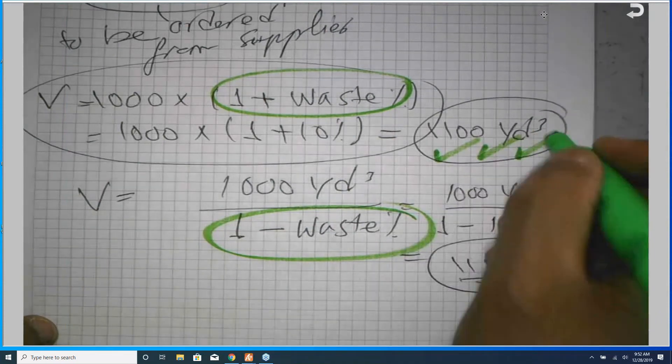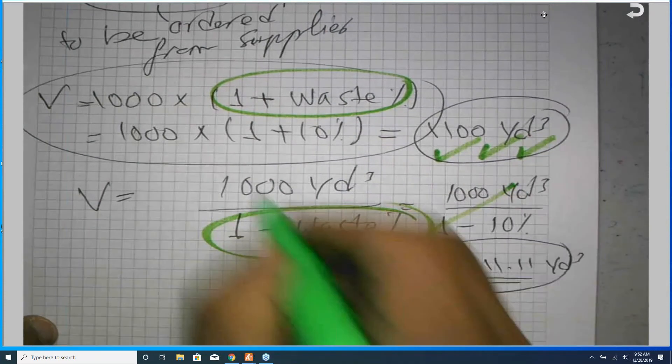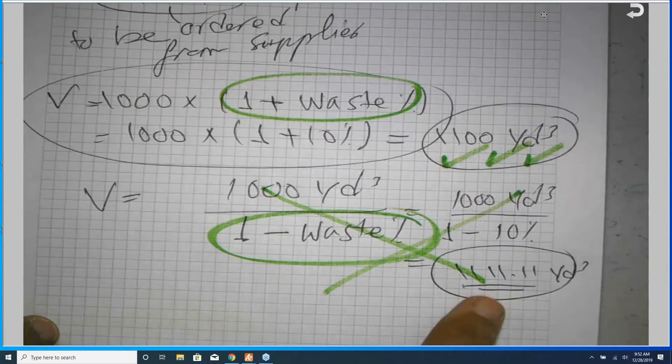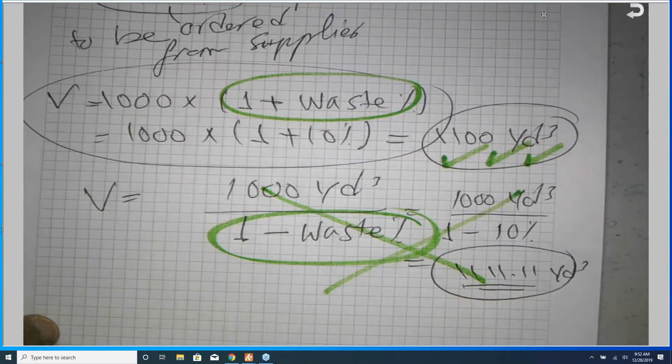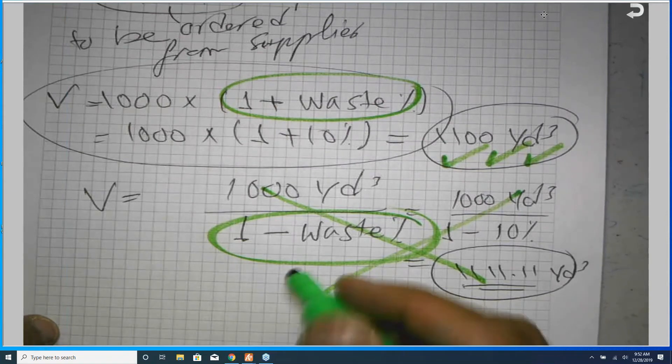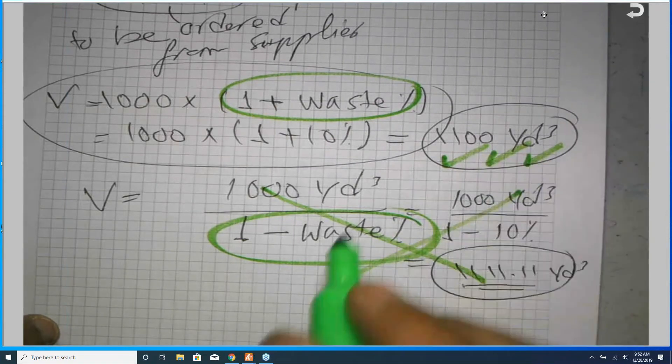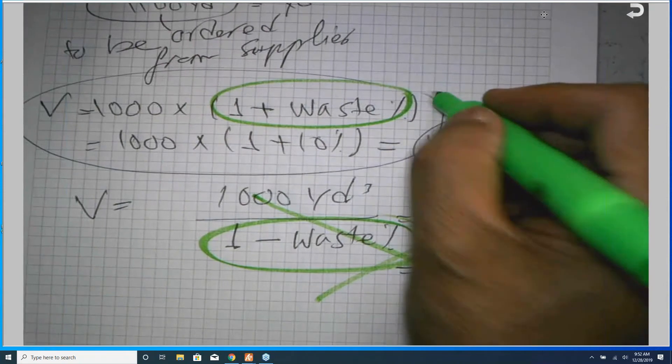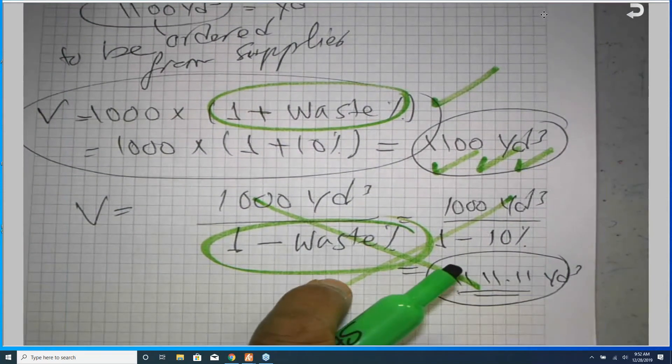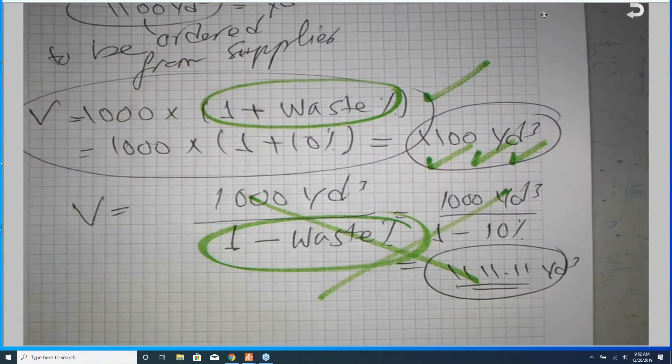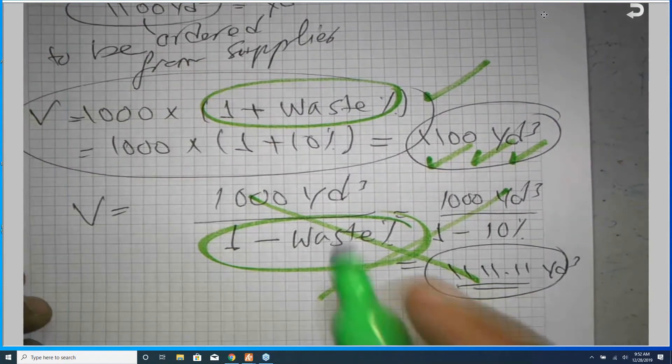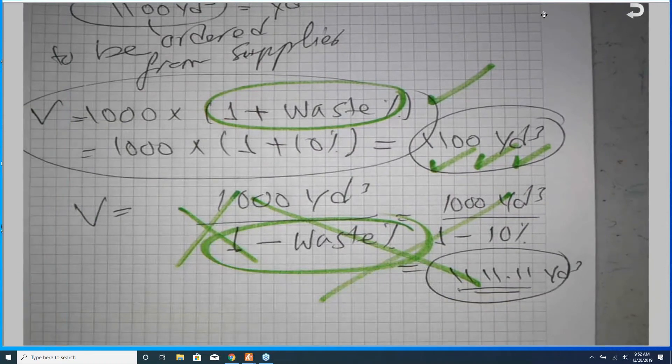1,111.11. Here I got 1,100 cubic yards. So I have two numbers. Which number is correct? Or which is the right way of calculating the waste? Shall I multiply it by 1 plus or divide by 1 minus? Which one is correct? This is the correct one. This is not the correct one. That means that because here you are adding another 10% of the waste, of the 10%, which we don't do that. So this is the right way. So if the waste is considered, this is the right way of doing it. If you see something like this, I saw a book like that - no, this is not the right way. This is the wrong way to include the waste.